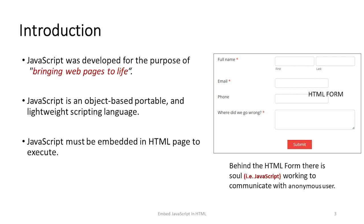JavaScript is a scripting language used to make a web page dynamic or interactive — that means bringing web pages to life. JavaScript must be embedded in an HTML page to execute. So we have to embed JavaScript with an HTML page to execute. As you can see this HTML form on the right side, it is a basic HTML form created by the markup language HTML. If we need to make it live and interactive, we need JavaScript.